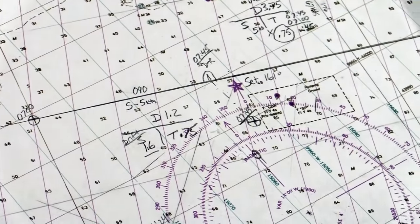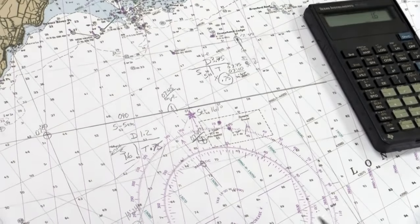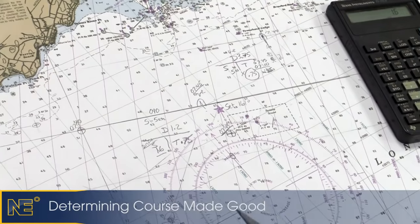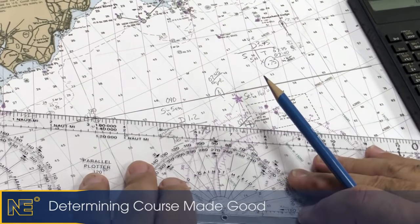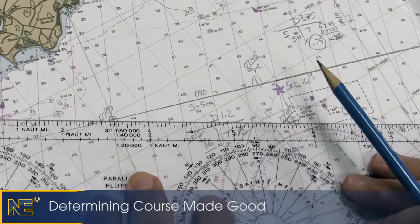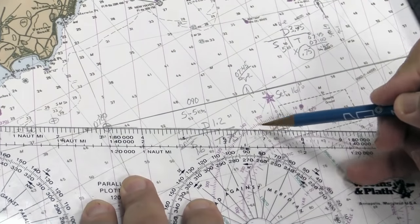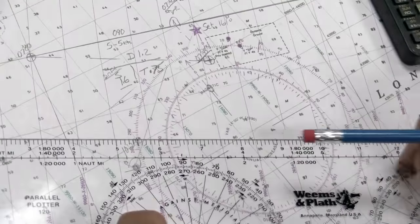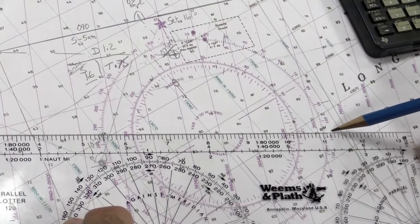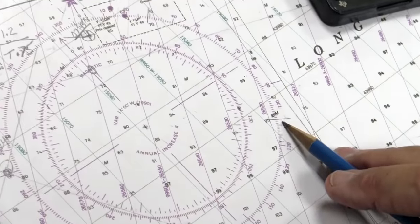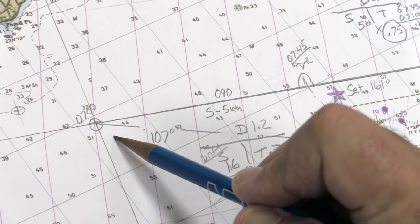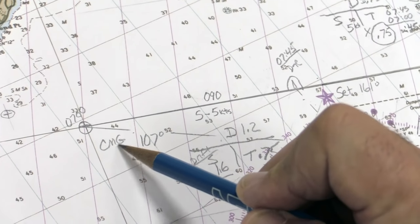Now we can determine something else. We can determine what course we actually made. From 0700 to our new fix at 0745, our vessel traveled in this direction. We connect those, roll it to the center of the compass rose, and since we're traveling more easterly, we find that we traveled approximately 107 degrees. And that's called our course made good, the course we actually made over the water.